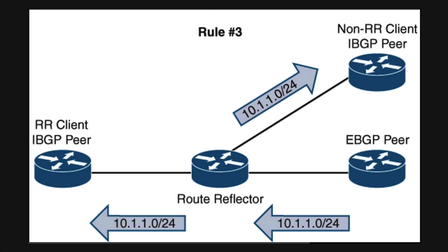Rule number 3: if a route reflector receives a route from an EBGP peer, it advertises the route to route reflector clients and non-clients.